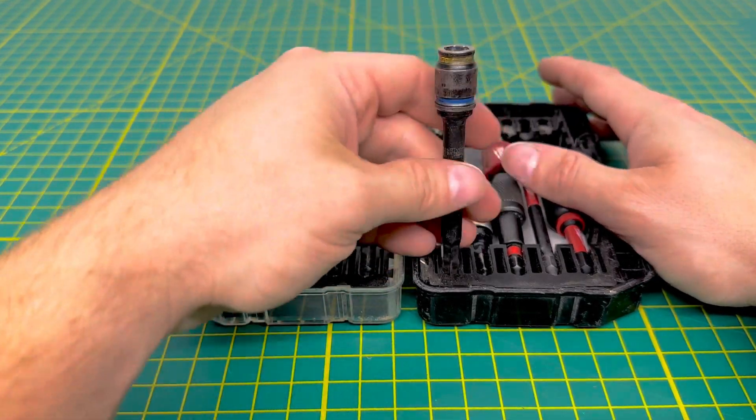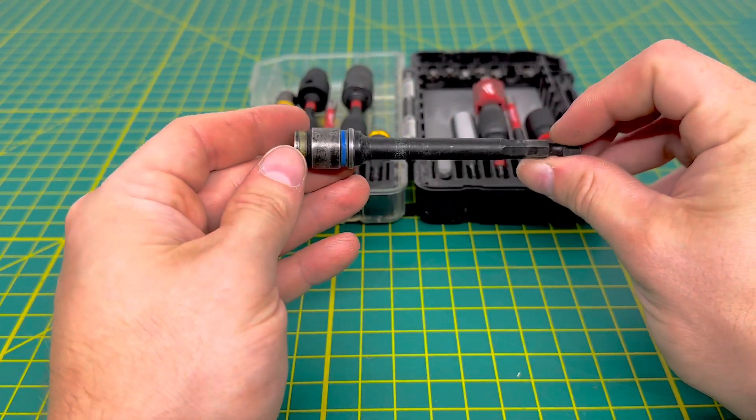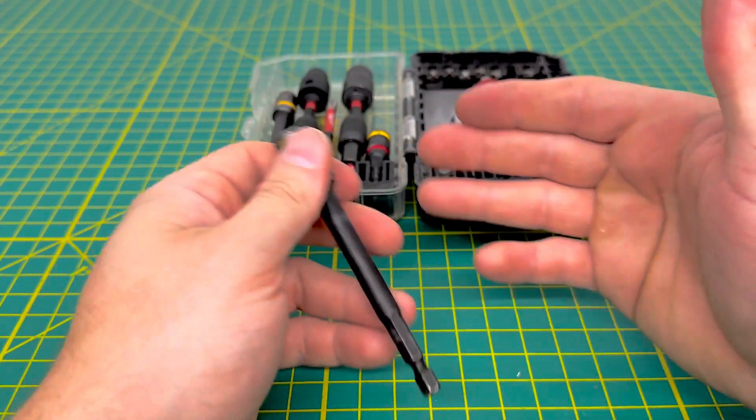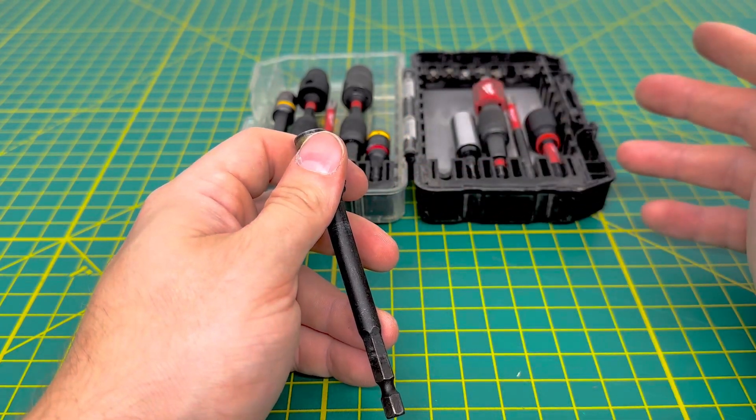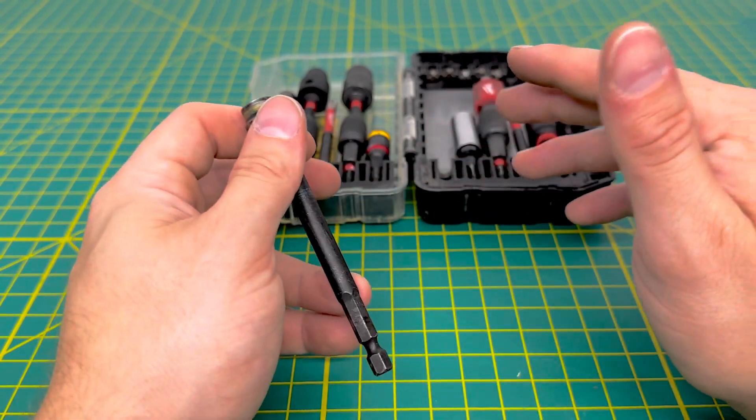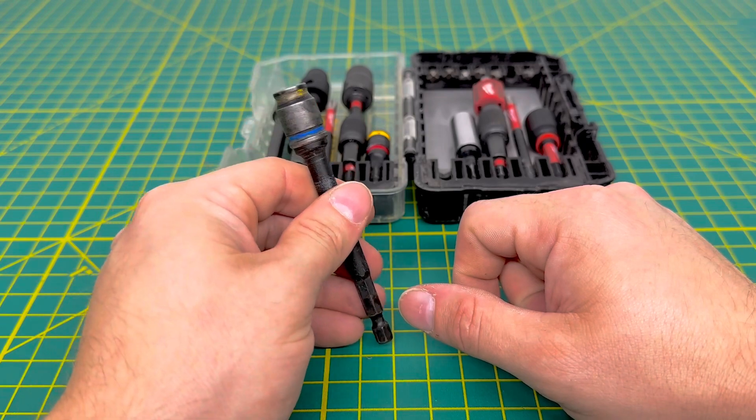And this is probably my most used bit. This is my 5/16ths 3/8ths bit. Again, this is the 4-inch version of it. You can get, like I said, there's three other different sizes you can get. So whatever floats your boat, you can get that size. I just prefer the 4-inch size. This is probably my most used bit, because I use a lot of 5/16ths screws.